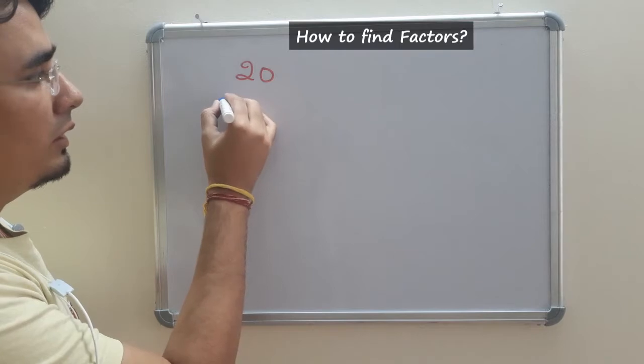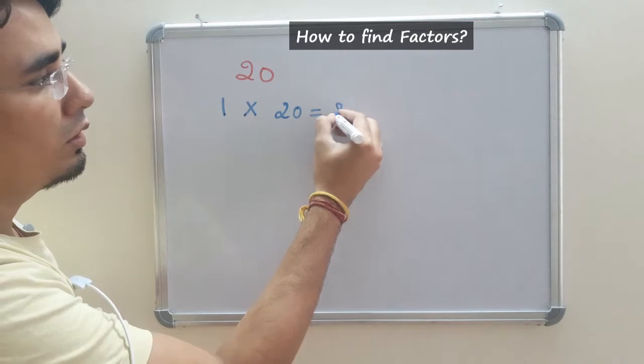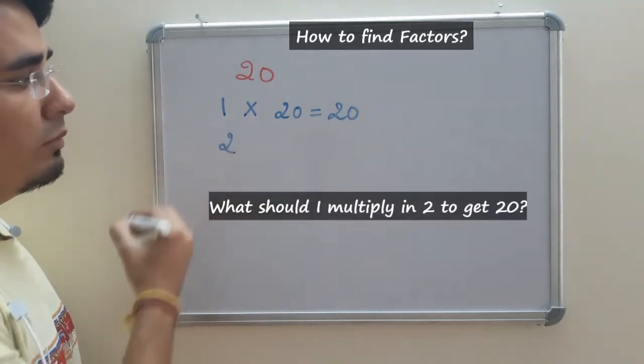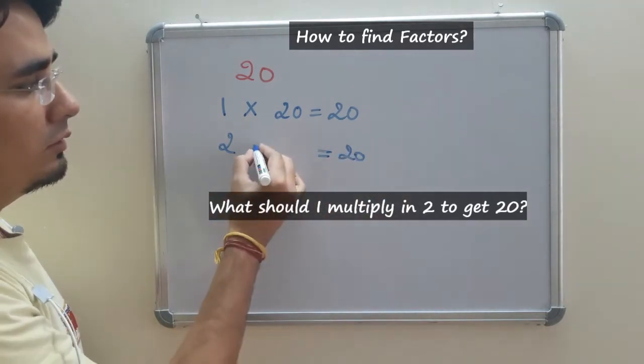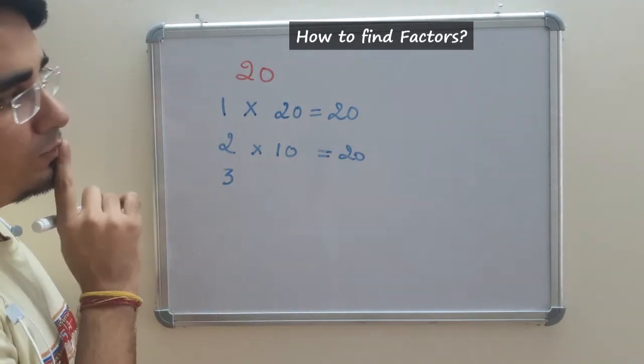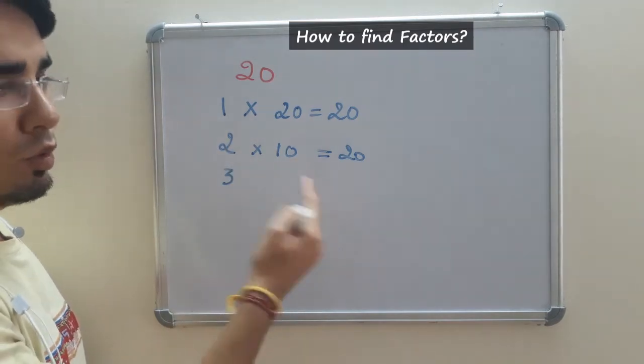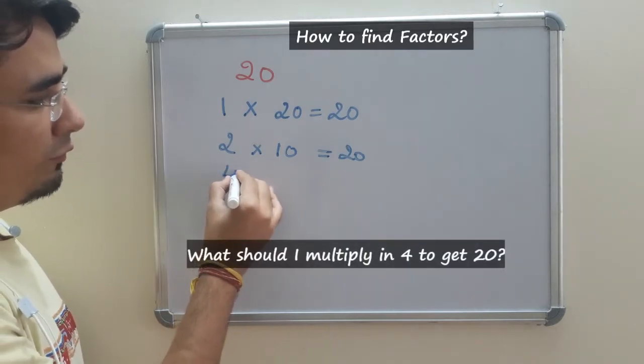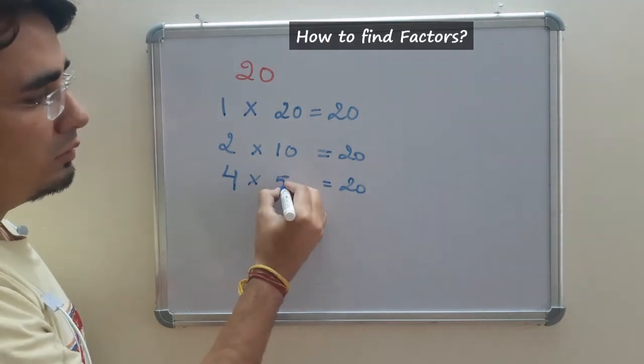I will be thinking about what should I multiply by 1 to get 20. So I will be multiplying it by 20. What should I multiply by 2 to get 20? That is 10. What should I multiply by 3? It will come in decimal. That is not required. We should multiply by a whole number. So moving on to the next. What should I multiply by 4 to get 20? Yes, it is 5.